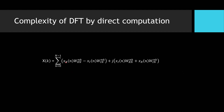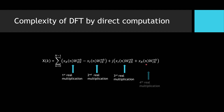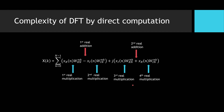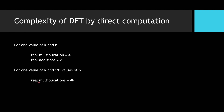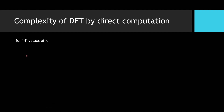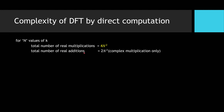Separating the real and imaginary parts, the expression inside the summation is for one value of N and one value of K. We can see four real multiplications and two real additions for one value of K and one value of N. Therefore, for one value of K and N values of N, we get 4N real multiplications and 2N real additions. For N values of K, the total is 4N squared real multiplications and 2N squared real additions.